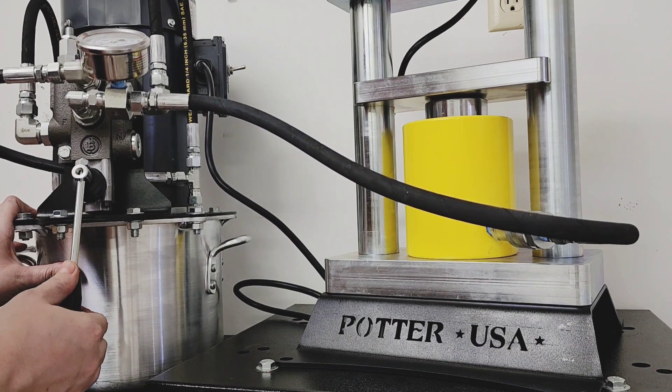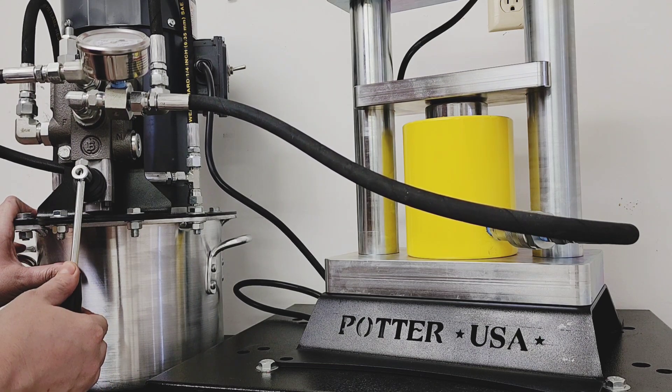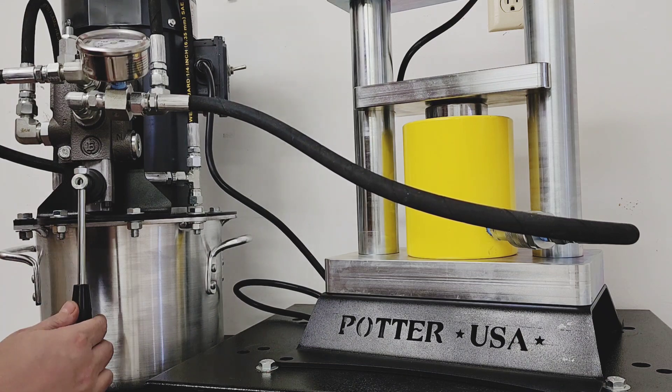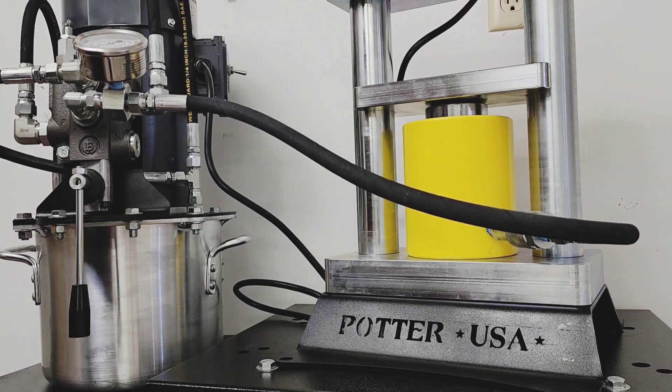This hydraulic cylinder only has a 2-inch stroke, so you will definitely need to use spacers when you are using your hydraulic press.